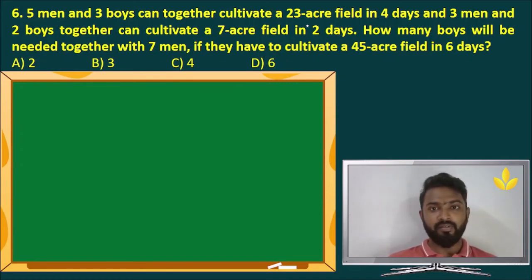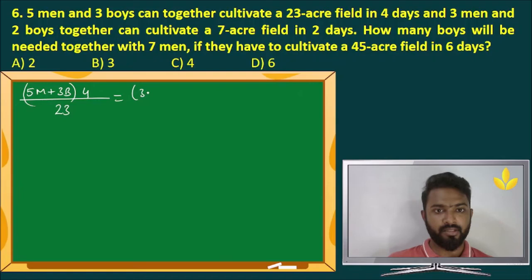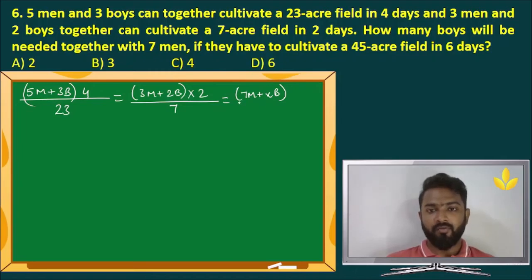5 men and 3 boys can cultivate a 23 acre field in 4 days. Here work has also been quantified. So M1 is 5m plus 3 boys. T1 is 4 days divided by W1 is 23 acres. This is equal to 3 men and 2 boys, so M2 is 3 men and 2 boys into time is 2 days divided by 7 acre. That is the work equals how many boys will be needed together with 7 men. So we have 7 men plus x number of boys. If they have to cultivate a 45 acre field, 45 is W3 in 6 days. This is the thing.